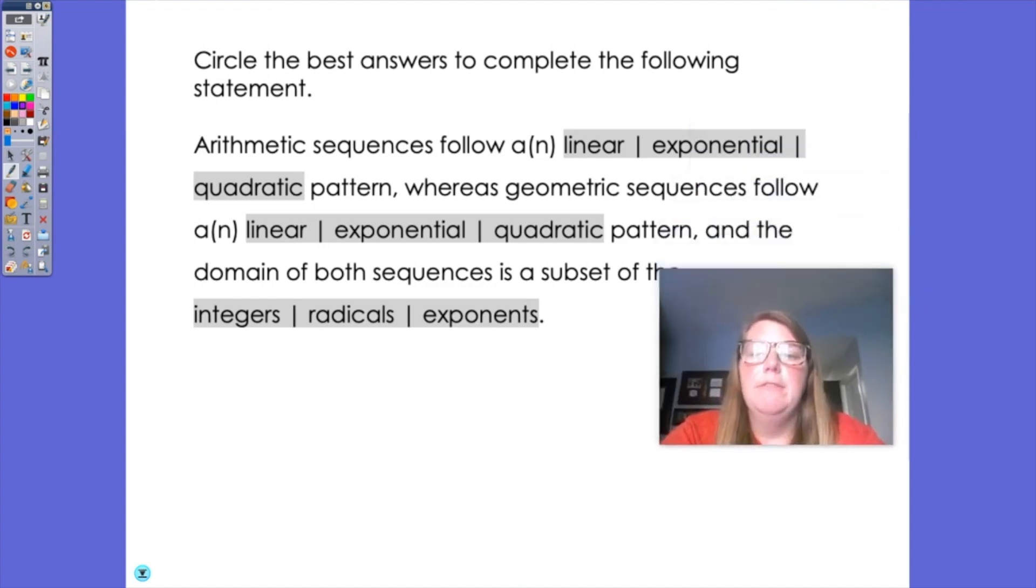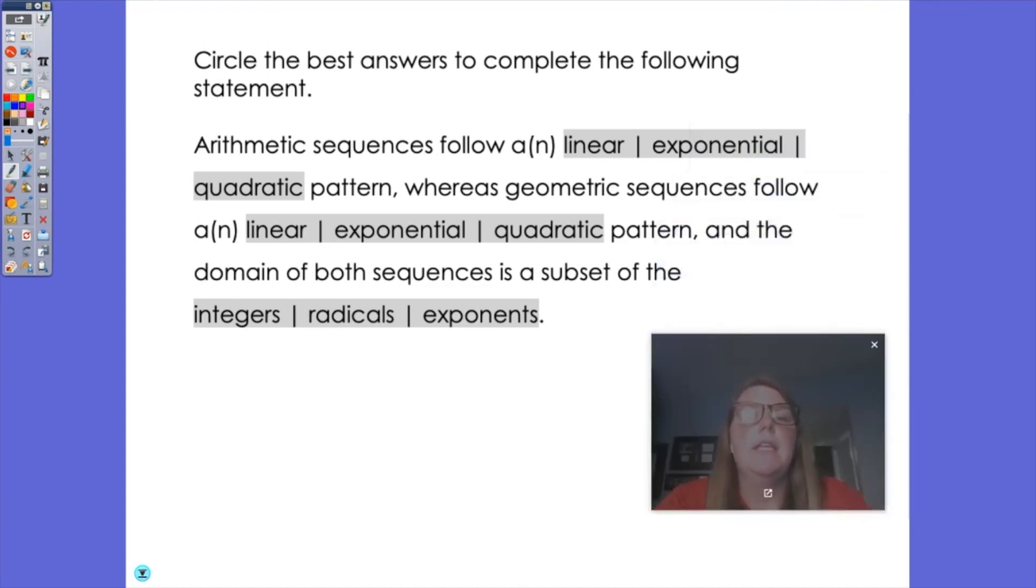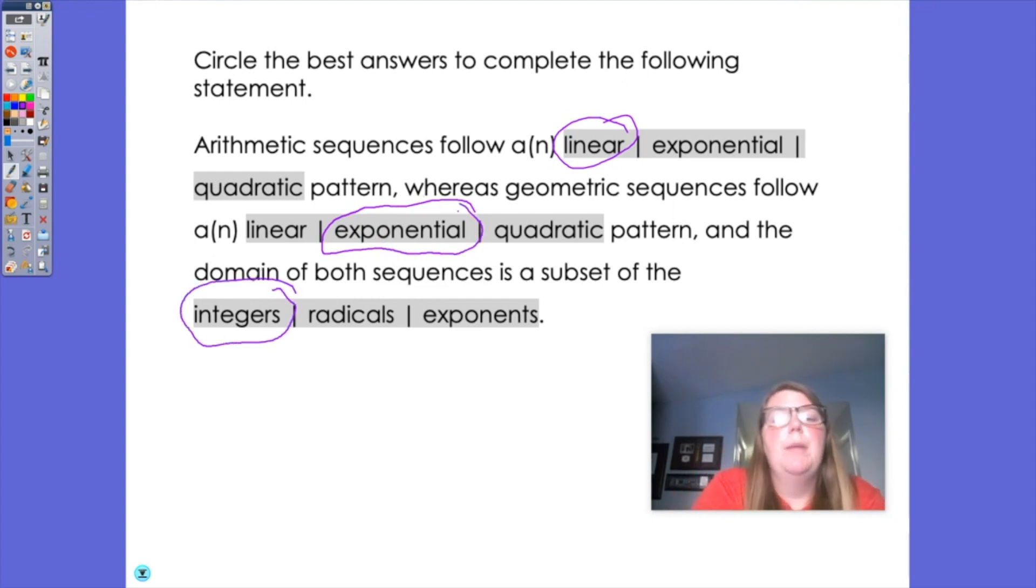Circle the best answers to complete the following statement. So arithmetic sequences follow a linear pattern, whereas geometric sequences follow an exponential pattern. And the domain of both sequences is always going to be integers. Remember, we're always going to input some sort of whole number, positive or negative. The previous problem with the two options just happened to be those natural numbers.